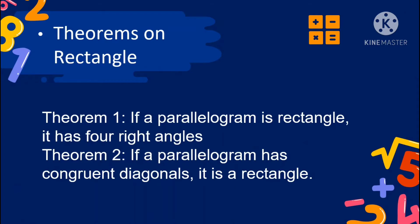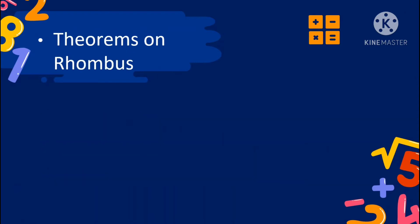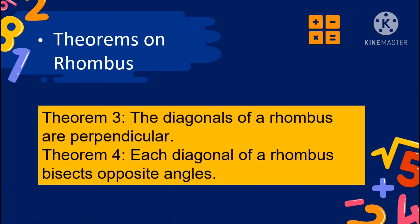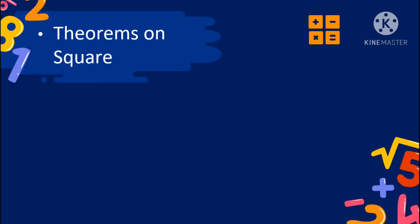Theorem number 2 for rectangle: if a parallelogram has congruent diagonals, it is a rectangle. Theorems on rhombus — Theorem number 3: the diagonals of a rhombus are perpendicular. Theorem number 4: each diagonal of a rhombus bisects opposite angles.